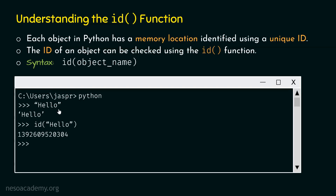Python prefers to reuse the same object instead of allocating new memory for the same object — it does not even make sense to allocate new memory. So Python saves a lot of memory this way. This is the reason why we get the same id. It does not matter whether we pass str to id or pass the object directly — we will get the same id.